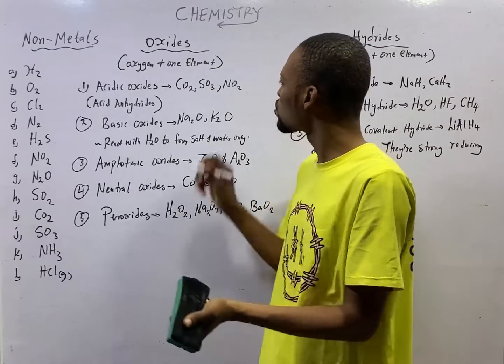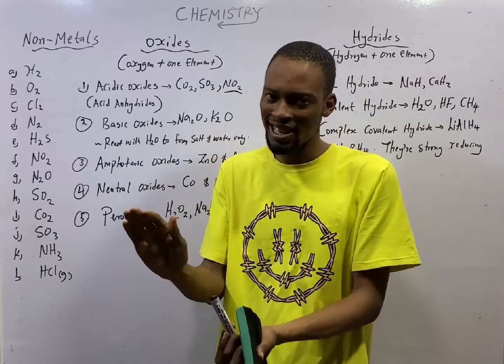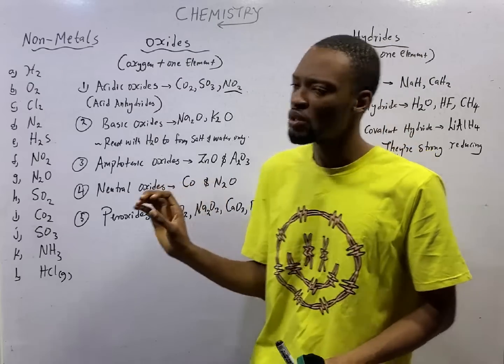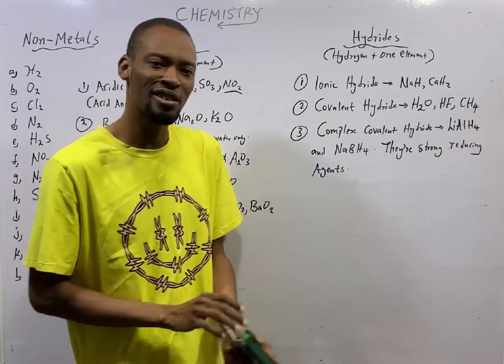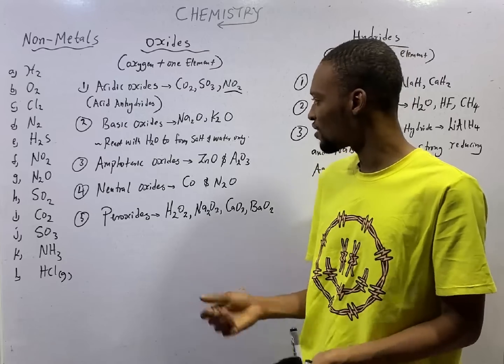Now, NO2 is referred to as mixed acid anhydride. Do you know why? NO2 will dissolve in water to form two acids, HNO2 and HNO3. This is why it is referred to as mixed acid anhydride.